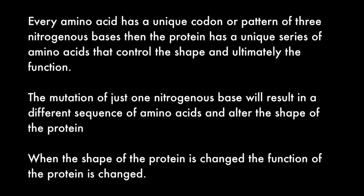Every amino acid has a unique codon, or pattern, of three nitrogenous bases. The protein has a unique series of amino acids that control the shape and ultimately the function. The mutation of just one nitrogenous base will result in a different sequence of amino acids and alter the shape of the protein. When the shape of the protein changes, the function of the protein is changed also.